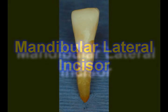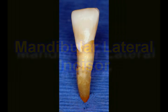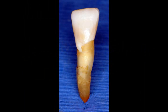The mandibular lateral incisor is very similar to a mandibular central incisor. The lateral incisor is not bilaterally symmetrical, meaning the mesial incisal and the distal incisal are not identical. In many cases, you're going to notice that the distal is lower than the mesial. This is true with most teeth in the anterior aspect of the mouth.